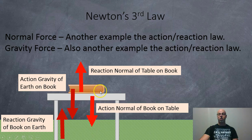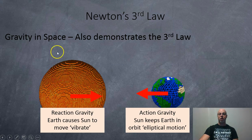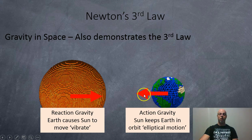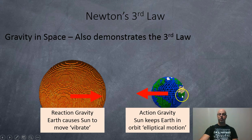The difference is the book is tiny and the earth is really huge, so you won't notice the earth move — but it does move a little bit. Gravity in space is also a great example: the earth is kept in orbit by the gravity of the sun, and if you were far away you would actually see the sun move just a tiny bit in a small circle as it follows planet Earth.